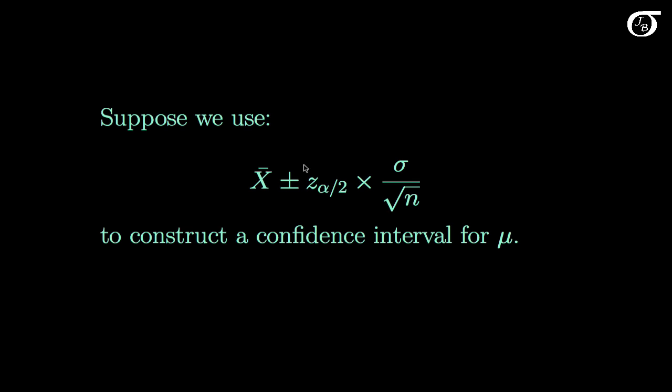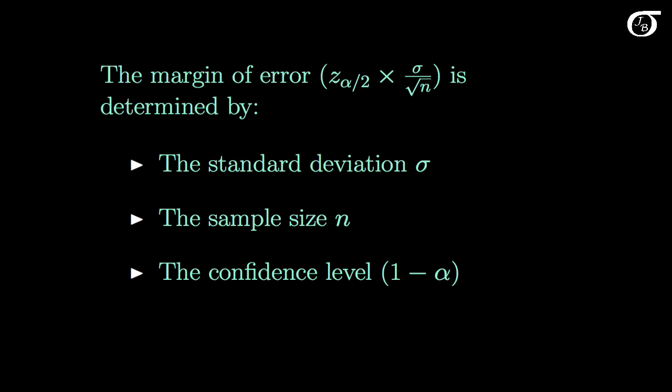And this bit here, z_{α/2} × σ/√n, is the margin of error of the confidence interval. This video looks at the various factors that affect that margin of error. The margin of error is determined by the standard deviation sigma, the sample size n, and the confidence level 1-alpha, because the confidence level is tied in with this z value.